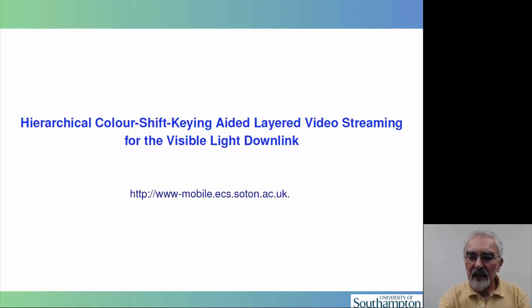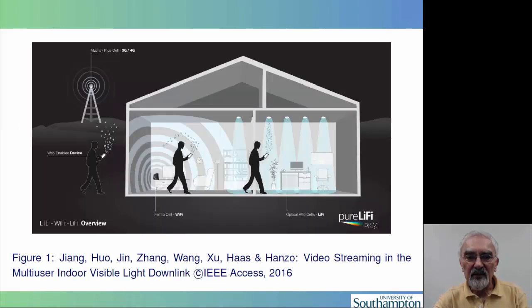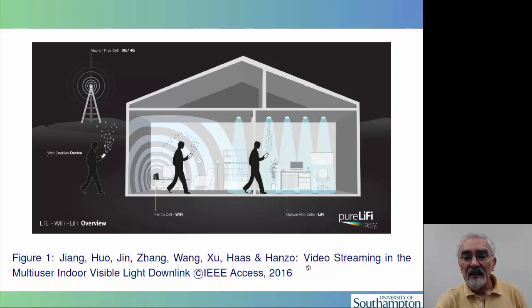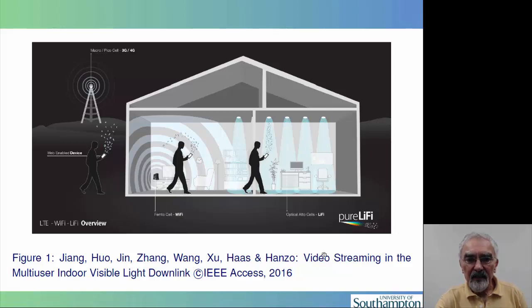My hope is that you would find this interesting and visit our website for related literature as well as for other demos. The previous study was dedicated more to the upper layer design issues of visible light communications, whereas by contrast this particular study is looking at some of the associated physical layer issues, in particular the design problems of unequal error protection and layered video compression and its transmission.